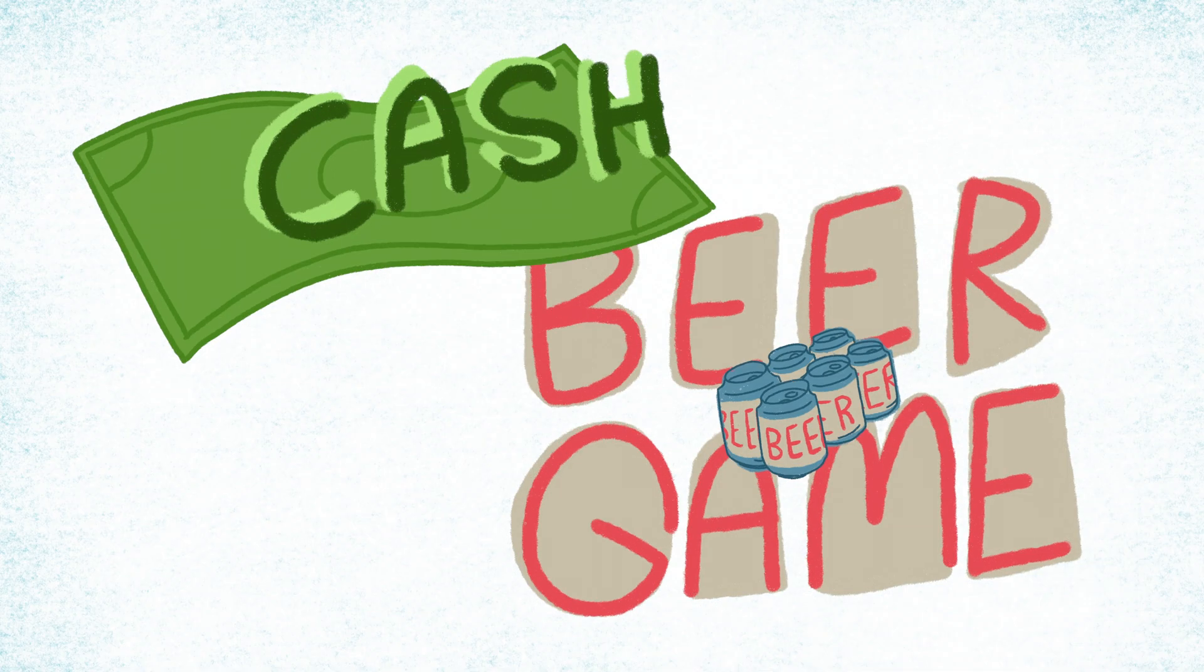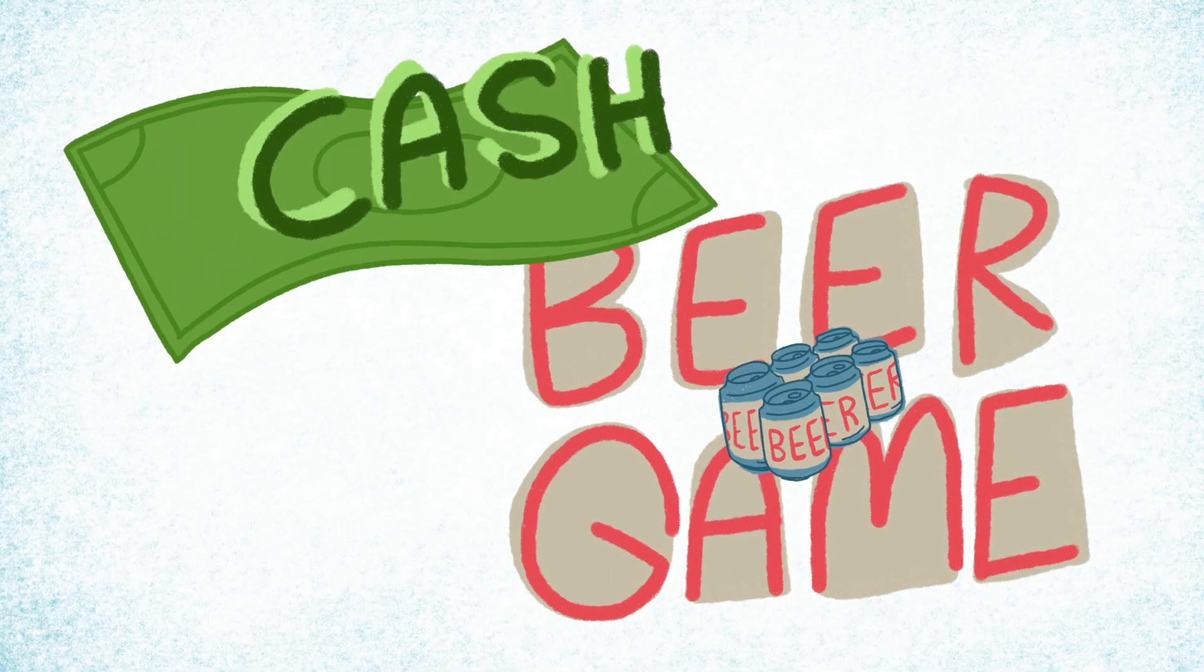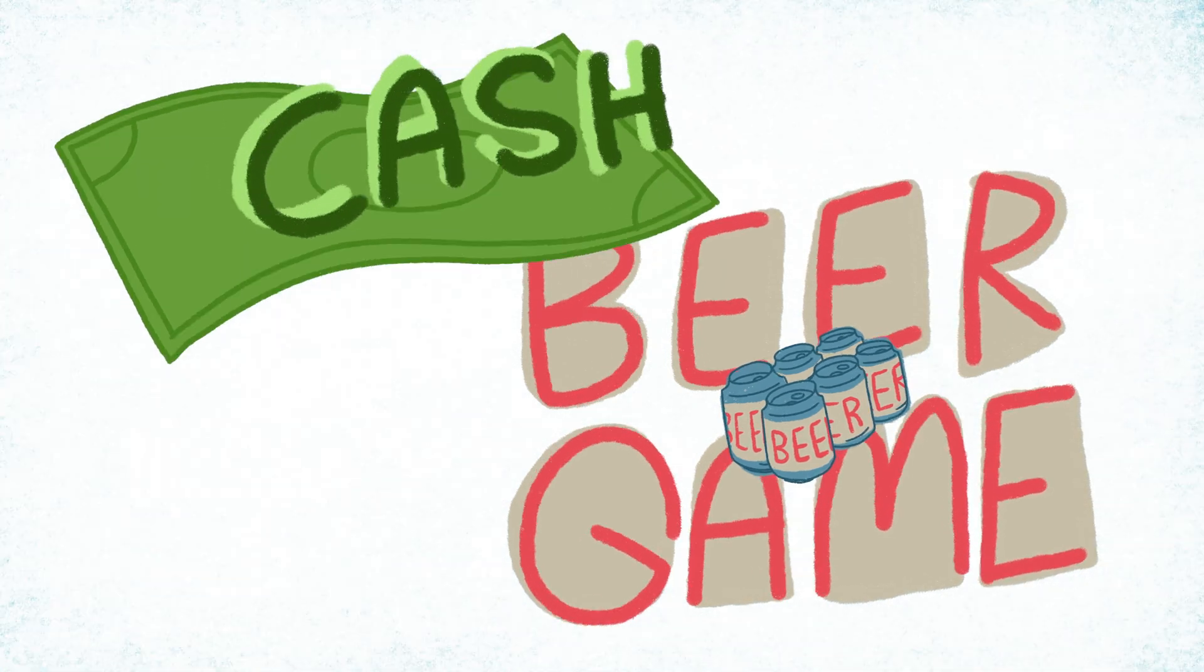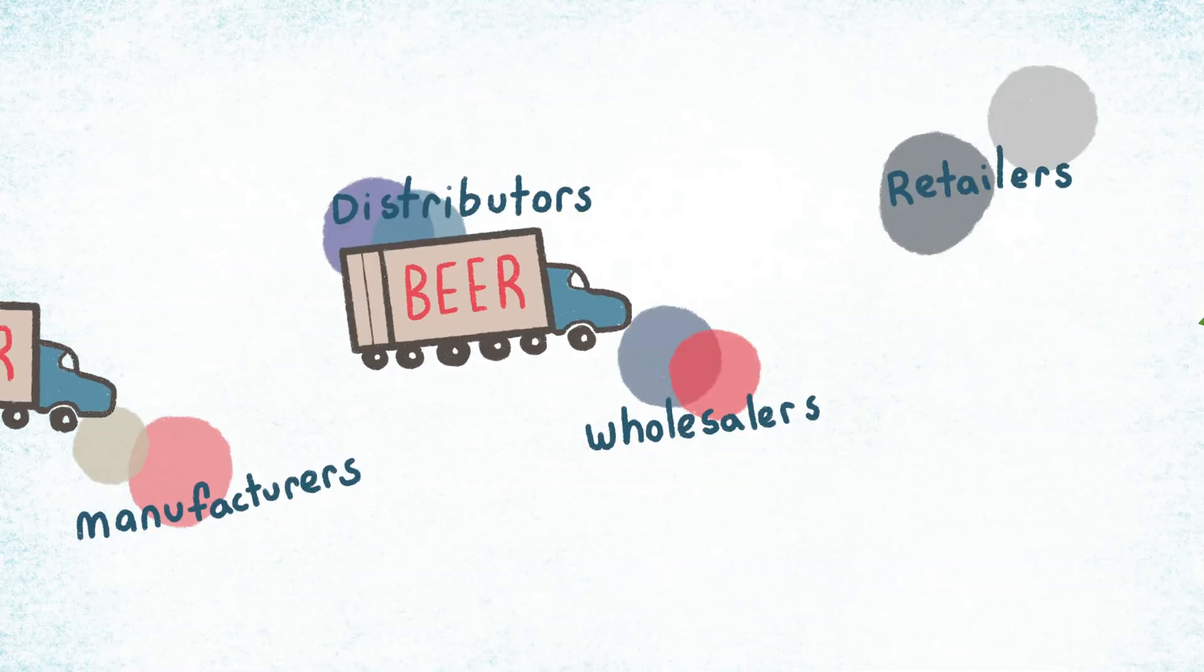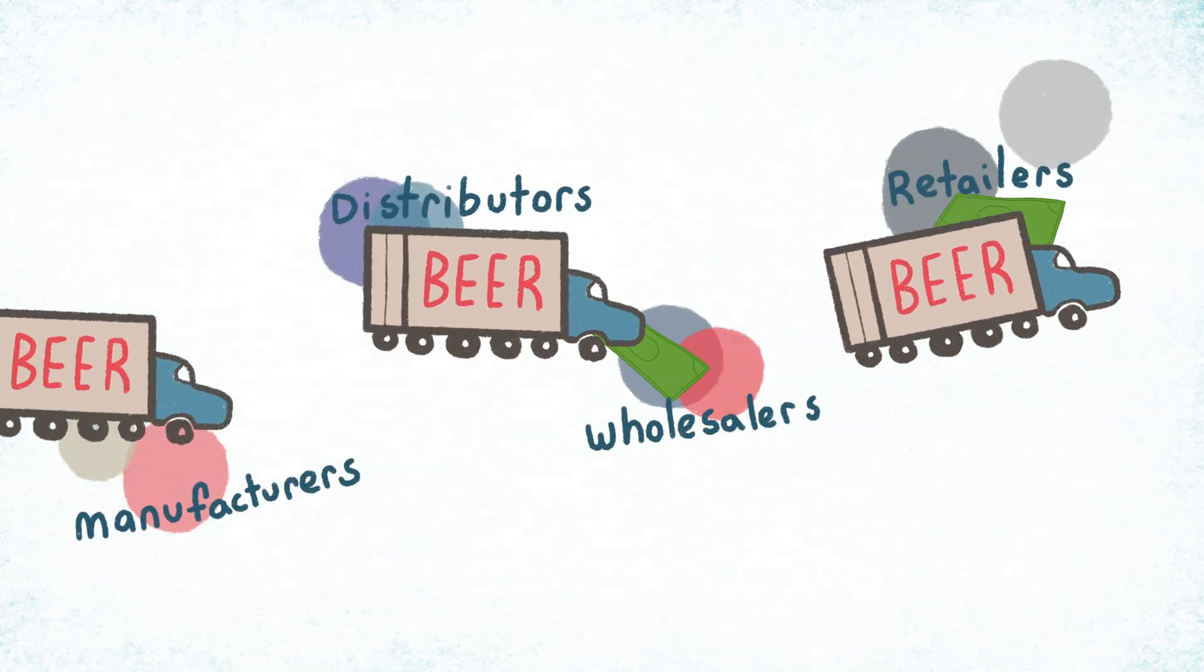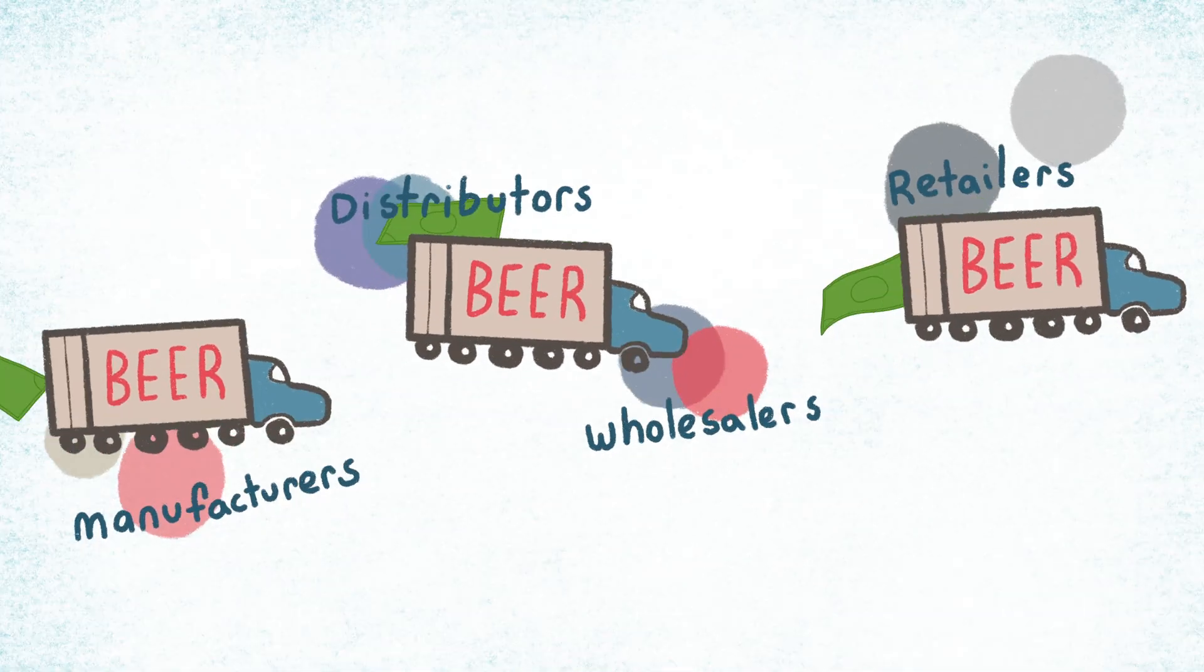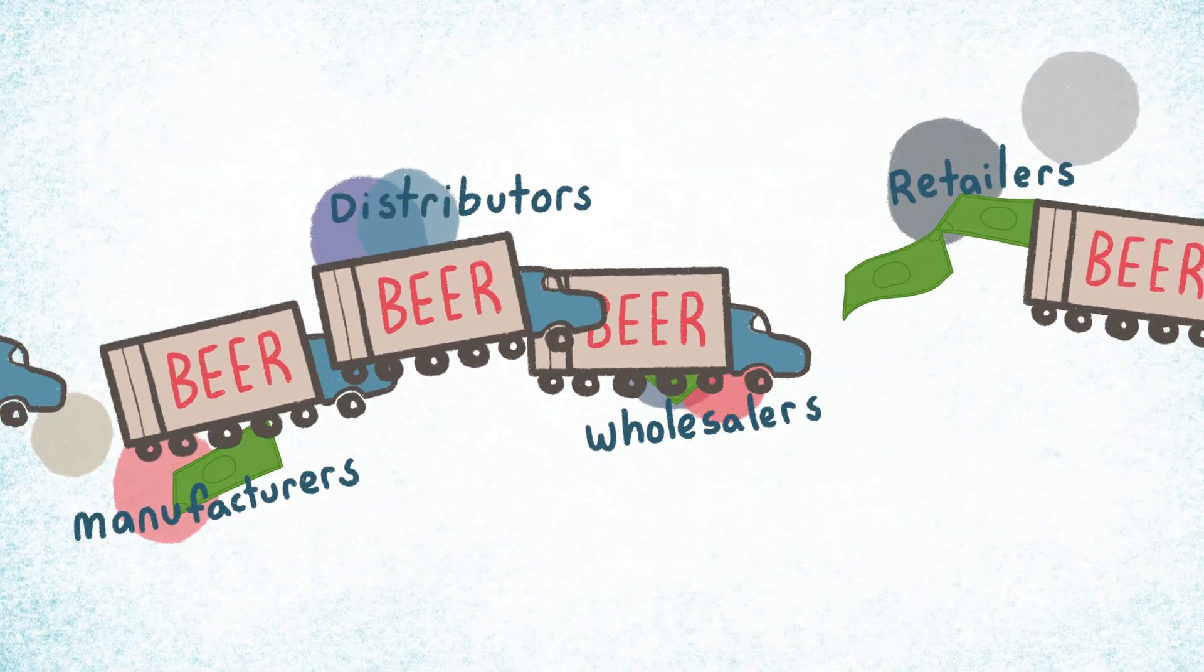In Shang's cash beer game, players pay for the orders they make and receive payments for the orders they must fill. This more complicated dynamic reveals the importance of working capital and how an integrated supply chain can react more quickly to changing business environments.